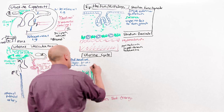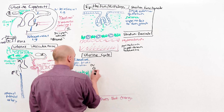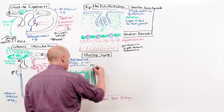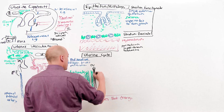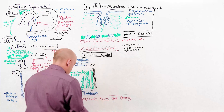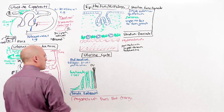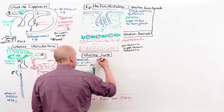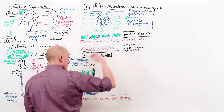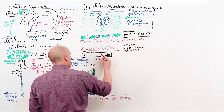The ovaries go from the follicular phase into the luteal phase, which corresponds to the secretory phase for the uterine cycle.